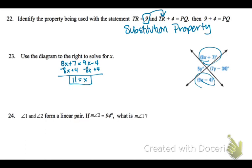On number 24, a linear pair means that the two angles add up to 180. So we can solve the equation and we get angle 1 equals 86.